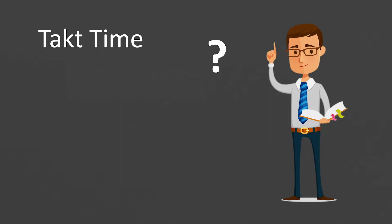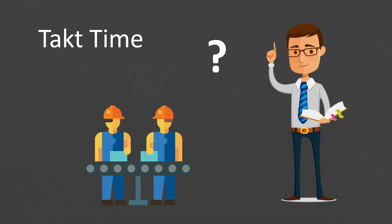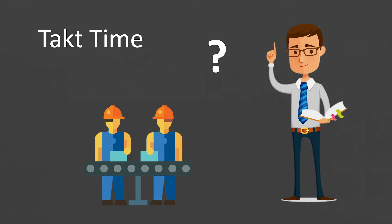Takt time is one of the key terms when speaking about shop floor processes and lean measures. It is most important to understand the correct calculation of the takt time, but also to know what the limits are. We will also have a few words about the cycle time in this tutorial. Make sure you have watched our previous episode about lead time on our channel.